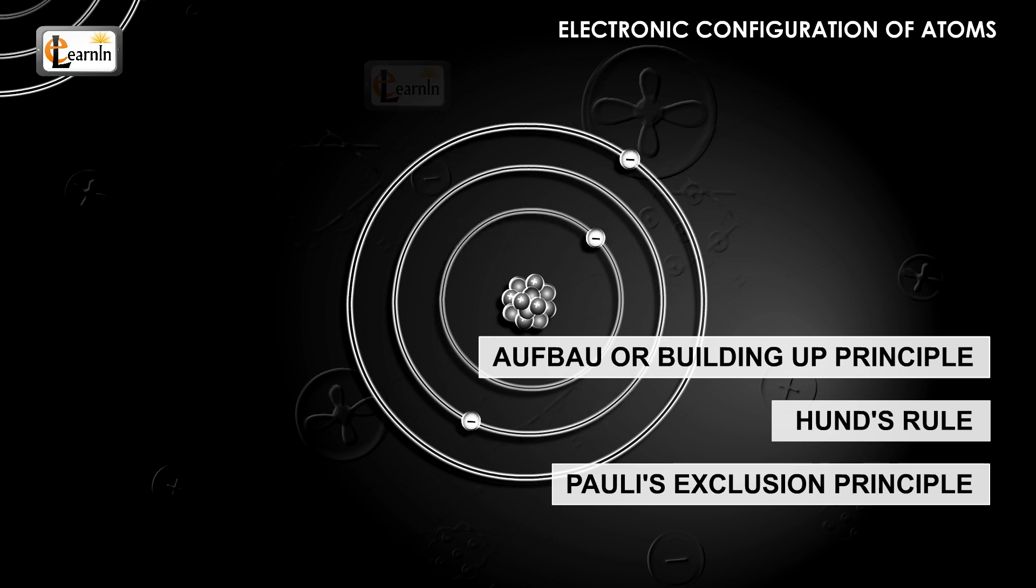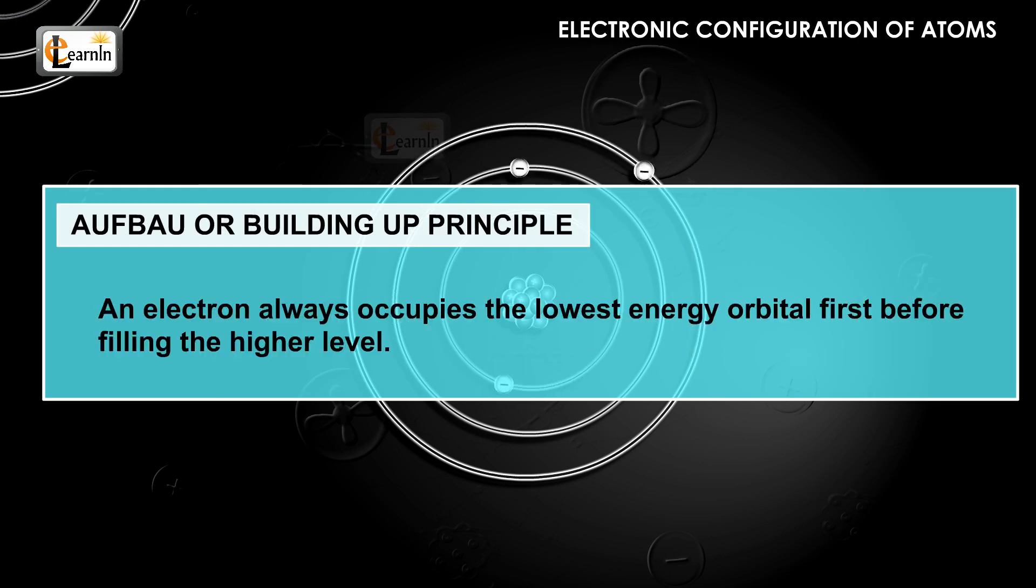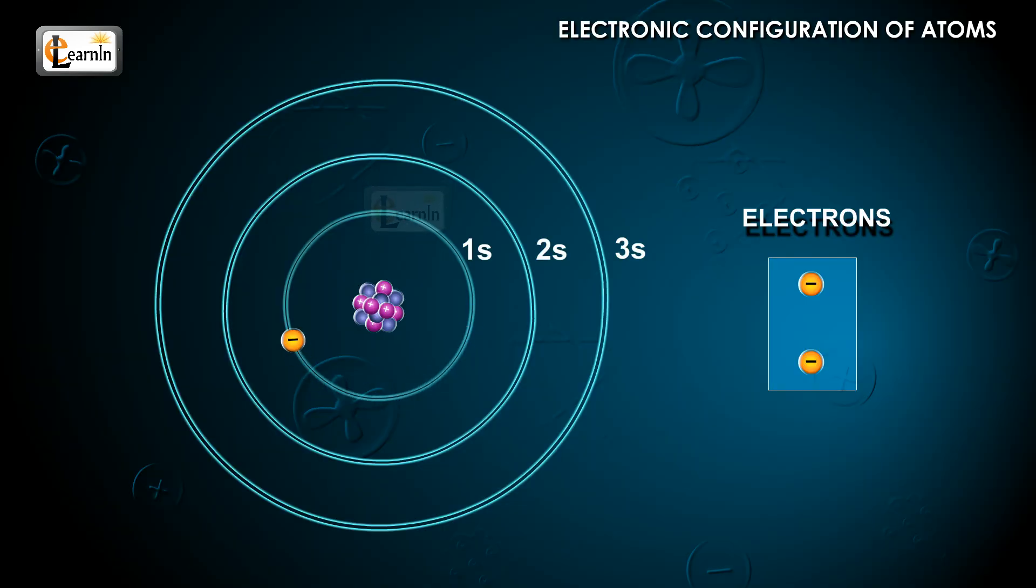Let's start with understanding the Aufbau Principle. According to this principle, an electron always occupies the lowest energy orbital first before filling the higher level. For example, an electron always occupies 2s, the lower energy orbital first, instead of the higher 3s orbital.